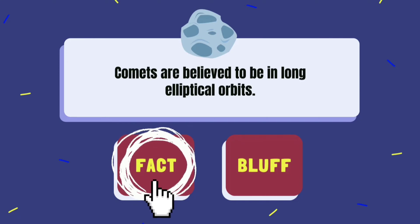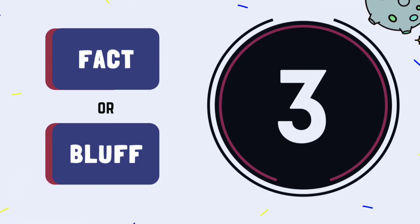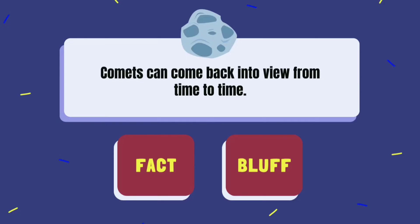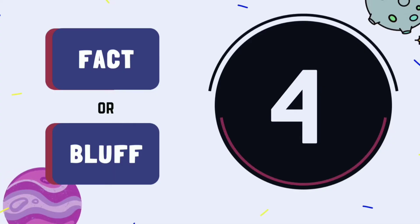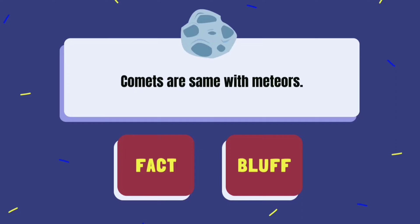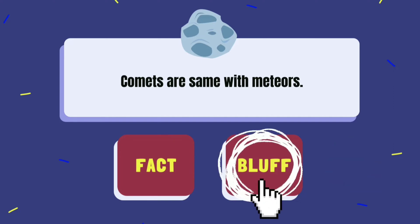Number 3: Comets can come back into view from time to time. Fact or bluff? The answer is bluff — the statement is false. Number 4: Comets are the same as meteors. Fact or bluff? The answer is bluff — the statement is false.